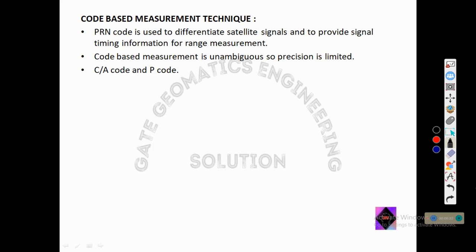In code-based measurement, the codes used are the Coarse Acquisition code and P-code. In this technique, two identical codes are generated — one from the satellite and one from the receiver. Both codes are similar but they do not correlate until the replica code in the receiver is time-shifted a little bit. Now let us see how this code correlation technique works.